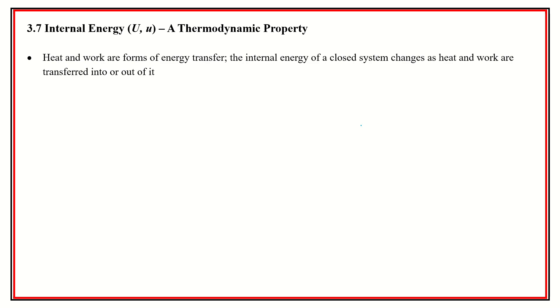So heat and work are forms of energy transfer, but internal energy of a closed system is something that we can try to measure. It's a state property where if we know enough information, for instance, we could be given the temperature and the pressure.